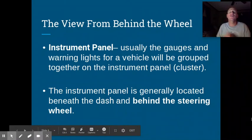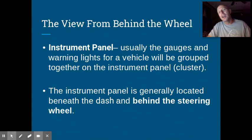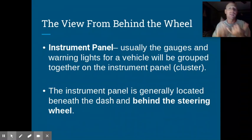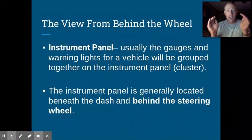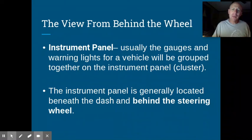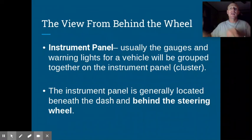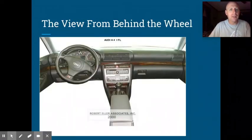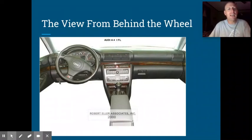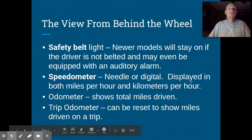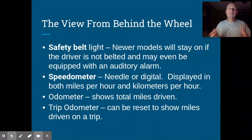The view from behind the wheel: regardless of what type of vehicle you have — whether a 2001 Toyota Corolla or a 2021 Dodge Challenger — all vehicles have some kind of instrument panel. The instrument panel contains all the gauges and warning lights for a vehicle, grouped together, which is why it's often called the instrument cluster. That panel is generally located beneath the dash and behind the steering wheel, though a few vehicles place it between the driver and passenger positions.